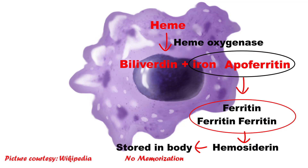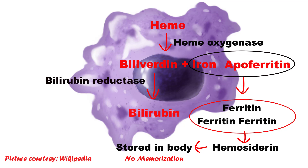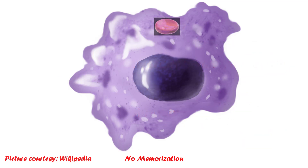Iron metabolism is not the focus of this video — just a brief overview of what happens to iron. Now, biliverdin will turn into bilirubin with the help of bilirubin reductase. This all happens in the macrophage. So the macrophage picks up the RBC and releases bilirubin into circulation. As this process occurs outside the vascular system, it is called extravascular hemolysis.